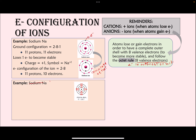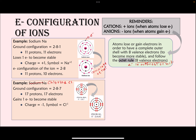Chlorine has a ground state configuration of 2, 8, 7. Since the outermost orbit has seven electrons, it's easier for chlorine to gain one electron rather than lose seven. Chlorine gains one electron — perhaps from sodium — and its configuration becomes 2, 8, 8. It now gets a charge of −1 and has more electrons than protons.